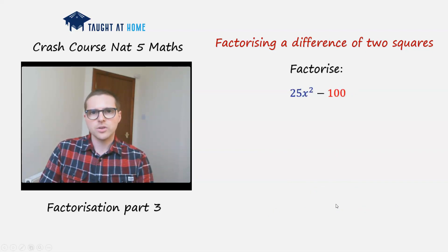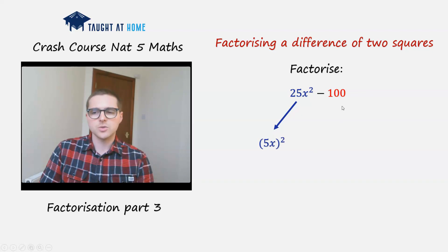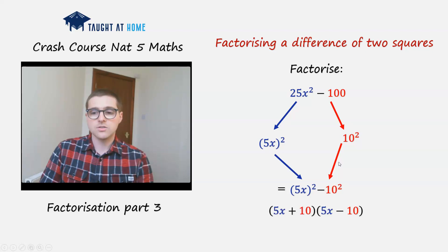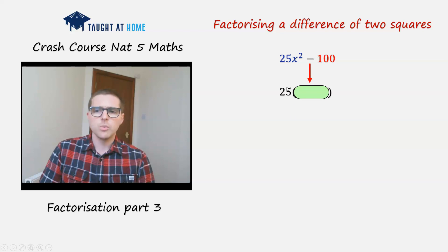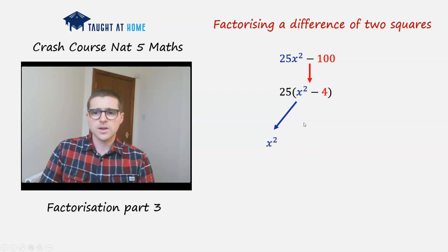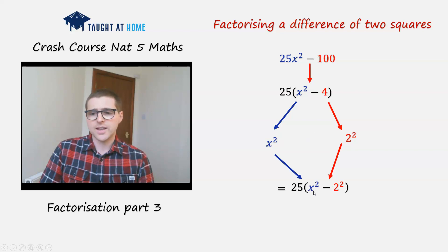How about this one? This one can be a little bit tricky — people can trip up. We've got 25x squared minus 100. You might be tempted to say 25 is 5 squared, so it's (5x) squared minus 10 squared, and you wouldn't be wrong. But this isn't actually fully factorised because we can still take out a further common factor. We can take out 25 as a factor, leaving x squared minus 4 inside the brackets. Inside, it's a difference of two squares: x squared minus 2 squared. So fully factorised it's 25 times (x + 2) times (x - 2).